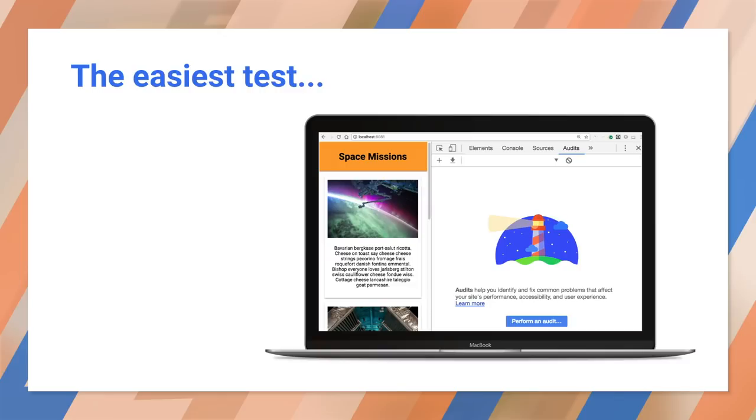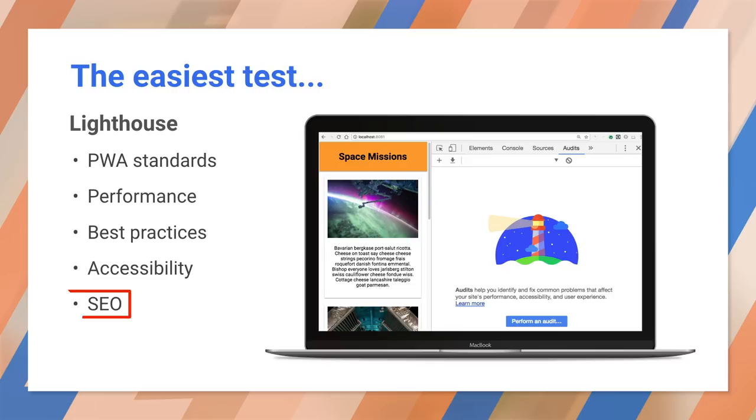You can write code that renders on the client or as server-side JavaScript. It's called isomorphic JavaScript. But that assumes you're using Node or another JavaScript server. And if you want an easy test, you can run Lighthouse. It includes some basic SEO discoverability tests.